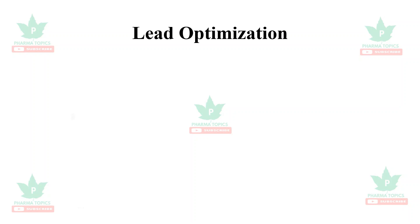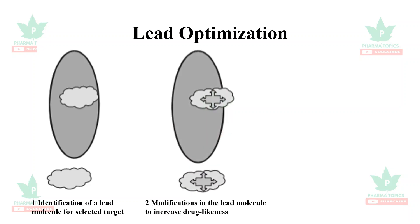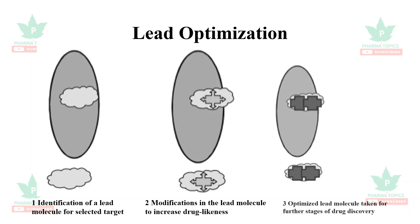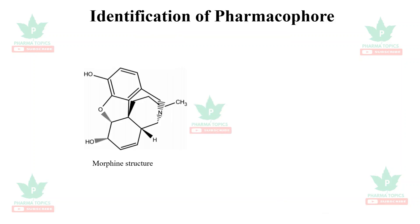Let us see an example. First, there is identification of the lead molecule for the selected target. Then modifications are made in the lead molecule to increase its drug-likeness properties. From this, you arrive at the optimized lead, which can be taken for further stages of drug discovery — this is called lead optimization.